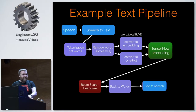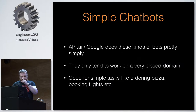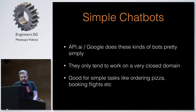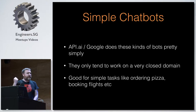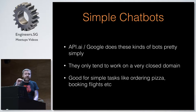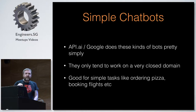These are simple chatbots — they're very much closed domain. api.ai and Google do these things pretty simply and they're probably the best to use. They only tend to work on closed domains. They're really good for things like ordering a pizza or booking a flight. These chatbots are very good for when you can totally predict what the conversation will be.